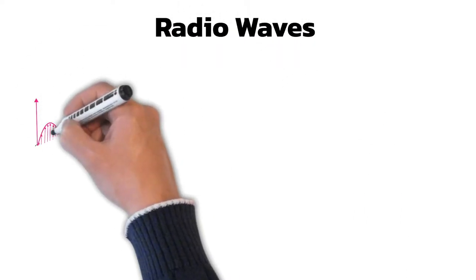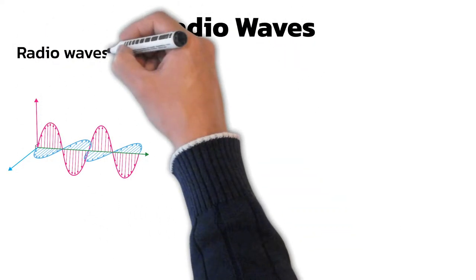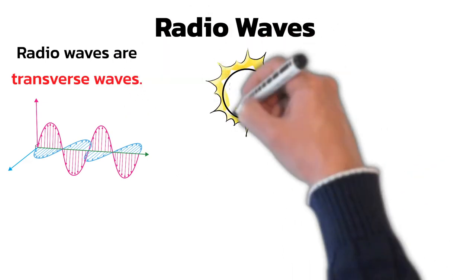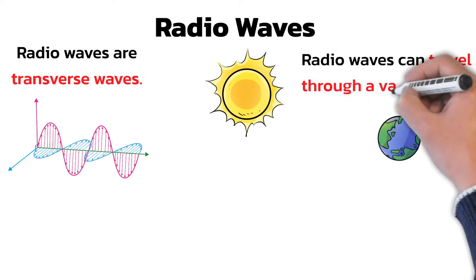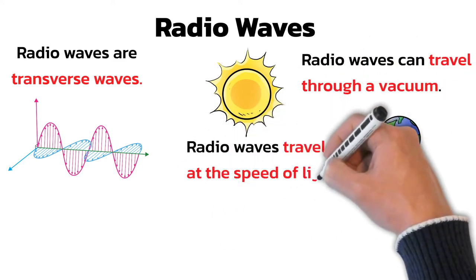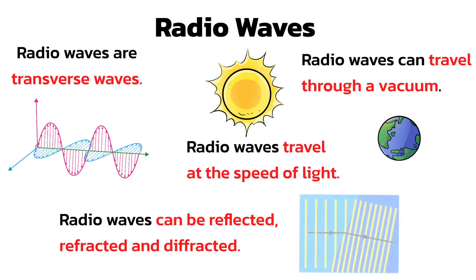As with all the electromagnetic spectrum, radio waves are transverse waves. They can travel through a vacuum, travel at the speed of light, and they can be reflected, refracted, and diffracted.